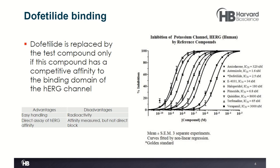Another classical technique used to assess hERG channel blockade is dofetilide binding. In this technique, tritium-labeled dofetilide is used, and you look to see whether it is displaced by a test compound. If your drug candidate has competitive affinity to the binding domain of the hERG channel, you'll see changes in dofetilide binding. Advantages include ease of handling and direct assay of hERG affinity, but disadvantages include working with radioactive compounds and the fact that you're looking at affinity rather than actual direct channel block.